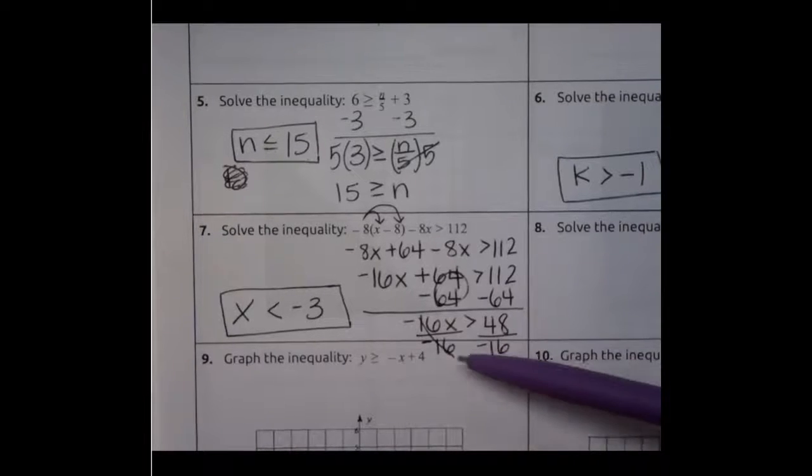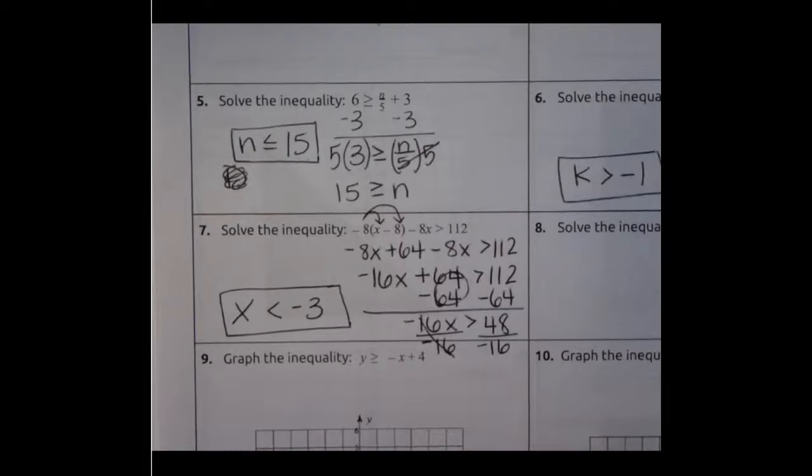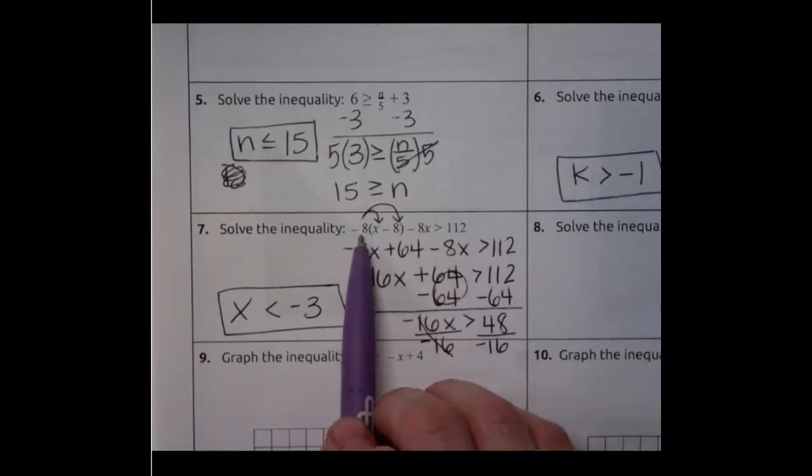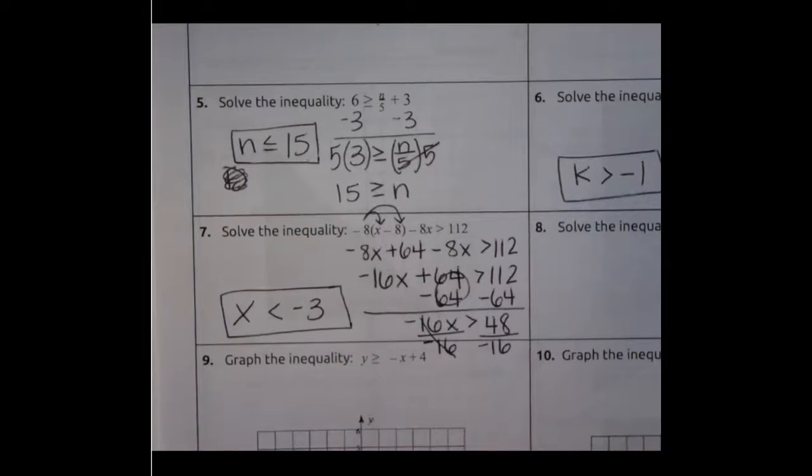Now remember it's not just dividing by a negative. It's also multiplying by a negative. So if we happen to multiply by a negative that would also change our sign or our symbol. But it's only when you multiply by a negative on both sides. So this multiplied by a negative is not a big deal because we're not doing that on both sides.